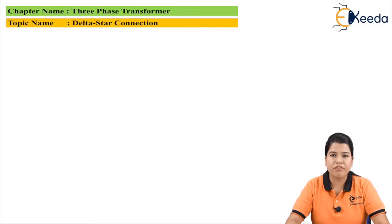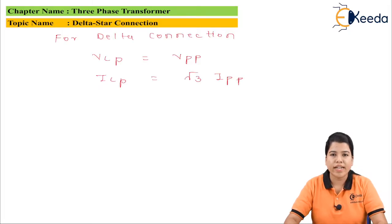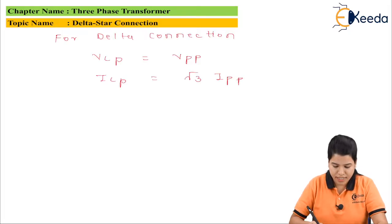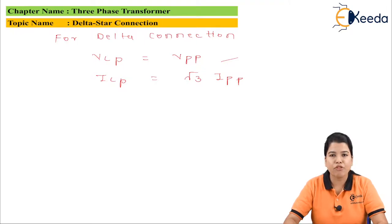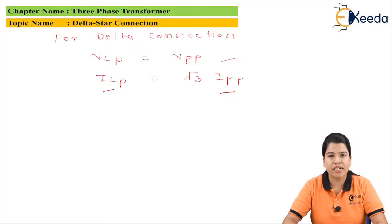The primary winding of the transformer is connected in delta whereas the secondary winding is connected in star. In the case of delta connection, the voltage relation is given by: VLP equals VPP, that is line voltage equals phase voltage, but ILP equals root 3 times IPP, that is line current equals root 3 times phase current.